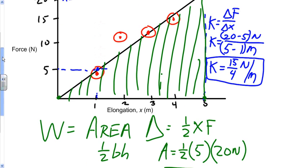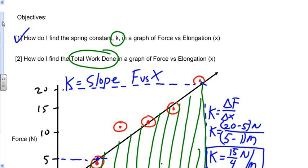So in this video, what we did is we calculated the total work done and we calculated the spring constant k. And again, just to recap, the spring constant k can be calculated by the slope of the force versus elongation graph. And the total work done can be calculated by the area underneath the force versus elongation graph.